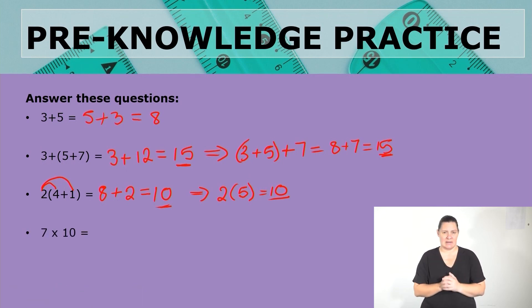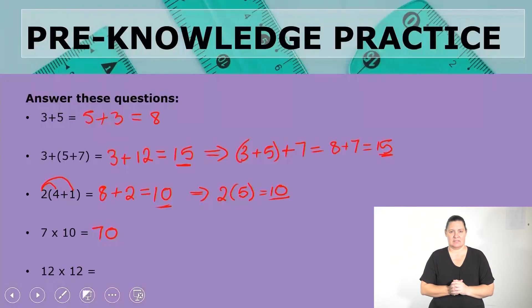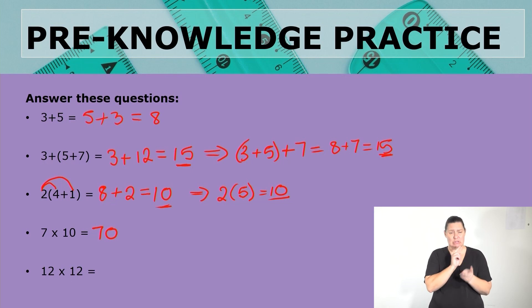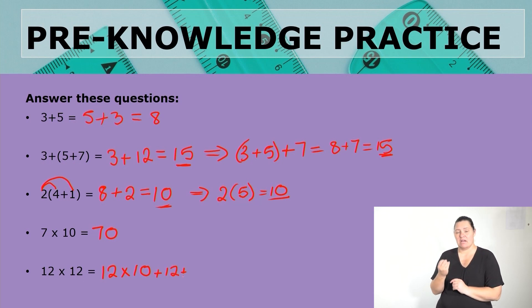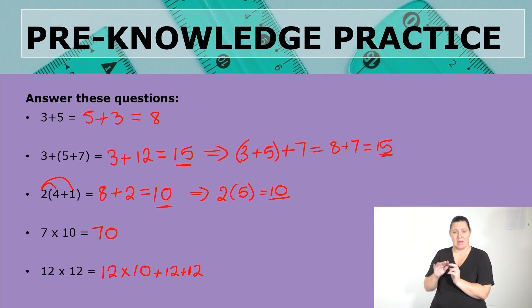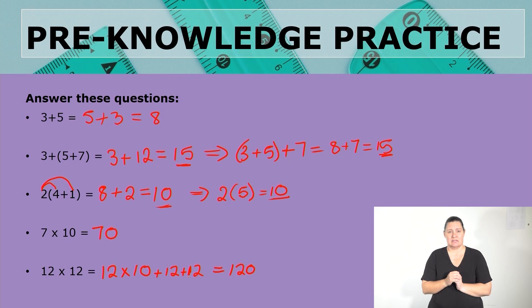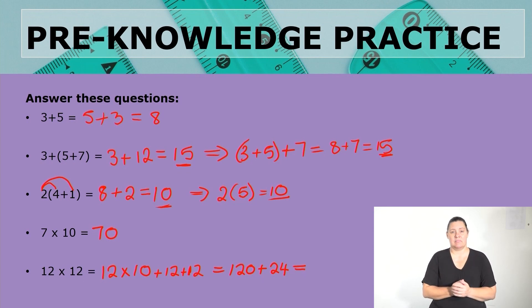Seven times ten means seven groups of ten, giving us seventy. For twelve times twelve, the multiples of twelve can be tricky, so we simplify using multiples of ten: twelve times ten is one hundred and twenty. We then add the two twelves that were left out — that is twenty-four — giving a final answer of one hundred and forty-four.